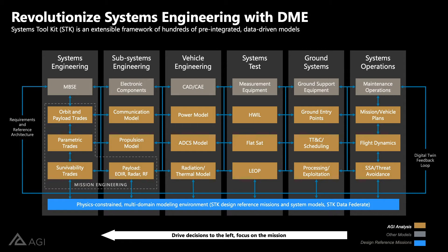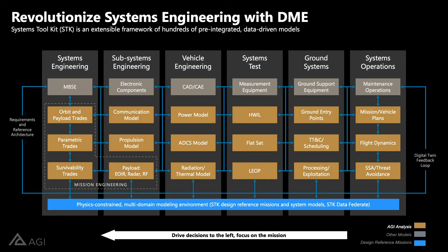Most organizations we've worked with — thousands of programs and hundreds of companies around the world — have a matrixed organization dealing with enormously complex systems. You have systems engineering, subsystems engineering, vehicle engineering for structures, whole teams dedicated to testing, ground systems teams, and teams that train and operate those systems. These are common silos that exist within organizations, and we've talked in other AGI presentations about how these disparate organizations and the replication of models across silos can lead to extensive reinvention.